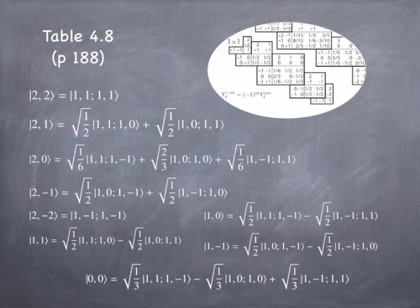That's why carbon ends up with L=1, not L=2. And since it's half full, J has to be L minus S. S is 1, L is 1, so J turns out to be 0 in carbon — though I don't have that slide in front of me, so I'm not positive. But that's basically how it works.